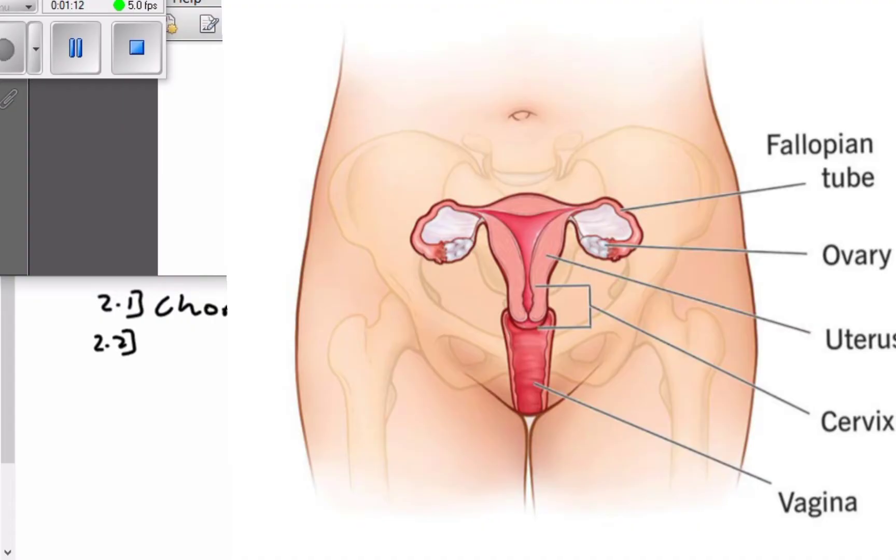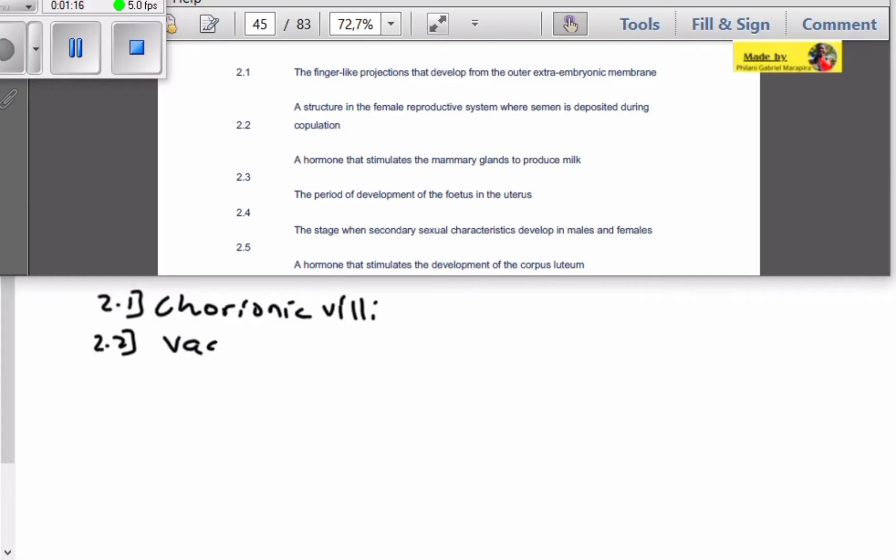Where is the sperm going into? They're going into the vagina. So that is the place where the sperm are deposited.